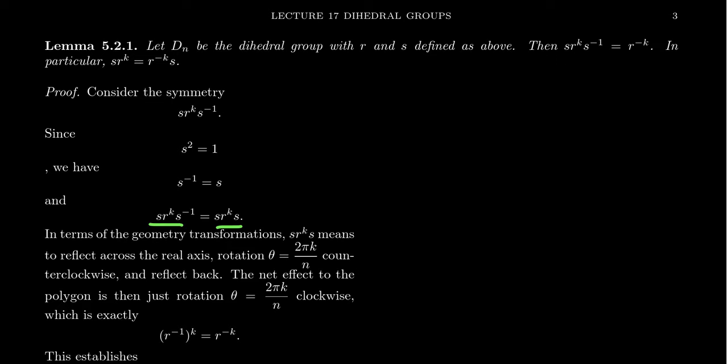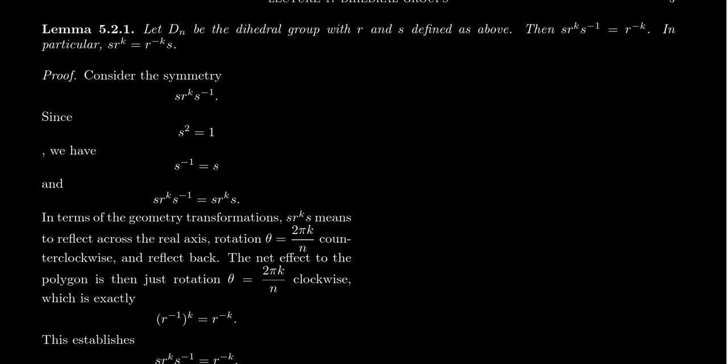We have to show that S R^k S = R^(−k). We're going to make a geometric argument, since these are symmetries of the regular n-gon.